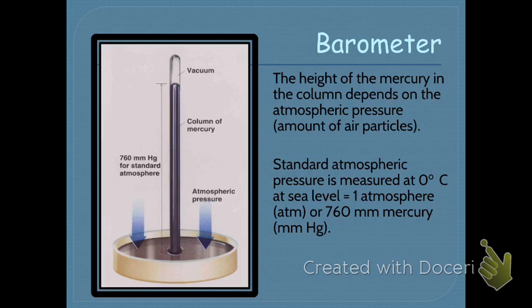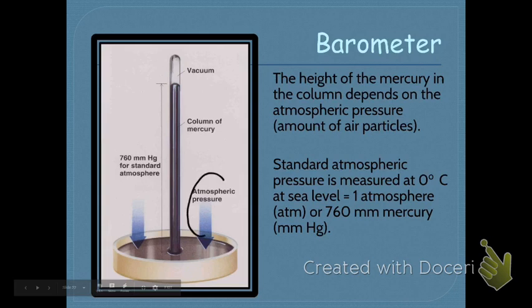This is what a barometer looks like. As there's more atmospheric pressure — more air particles above — it's going to push down on this reservoir of mercury, and that will cause the mercury to rise in the tube.